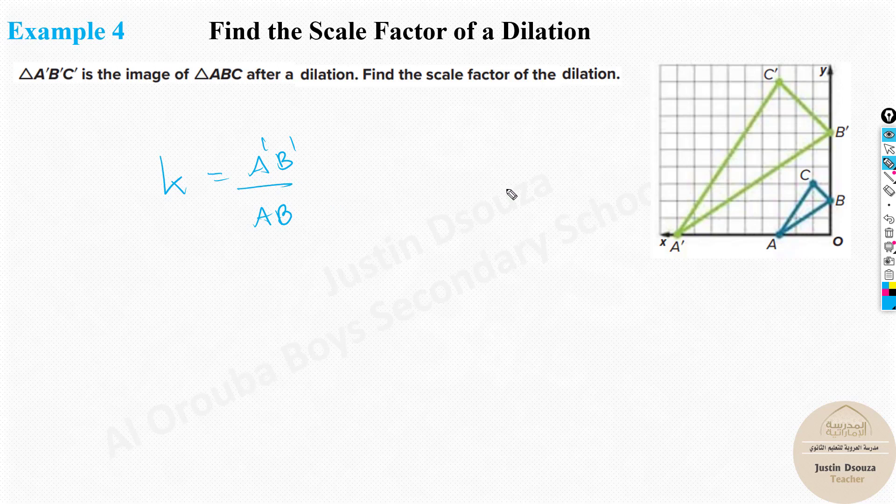But instead of taking any distance, any side length, we can just take coordinates. We can just take this and then we can make it equated to B dash or B, or C dash or C. This is very important because instead of finding the distance using distance formula and then dividing it, just choose a coordinate.